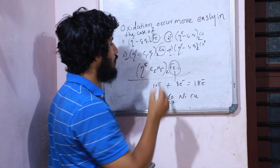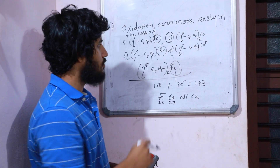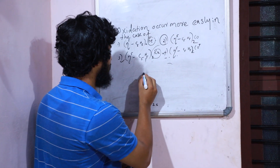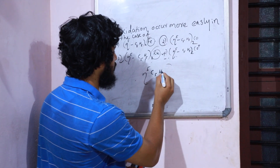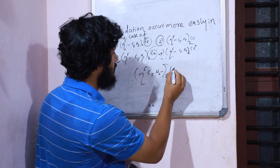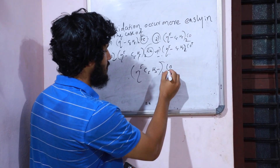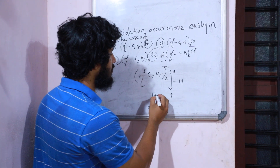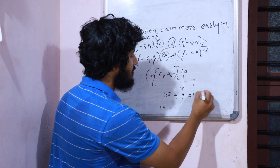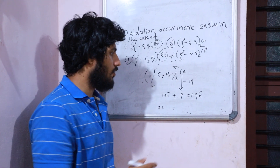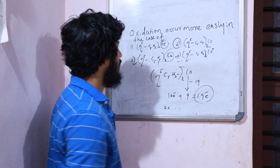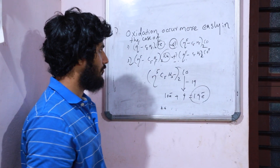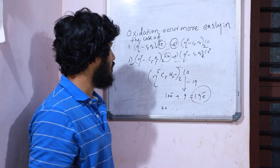The second option — cobaltocene — does not obey the 18-electron rule. This species contains more than 18 electrons; specifically, it contains 19 electrons. The valence electrons of cobalt are 9 electrons, and the two Cp ligands contribute 10 electrons, giving a total of 19 electrons. Therefore, according to stability concepts, the second species — cobaltocene — undergoes oxidation most easily.